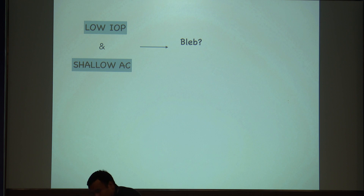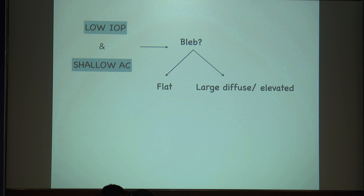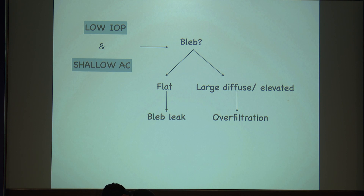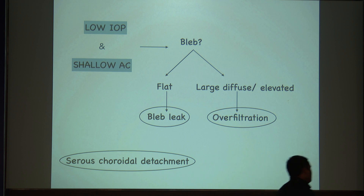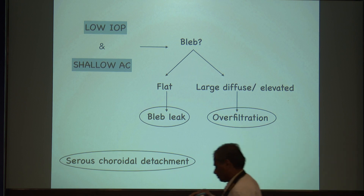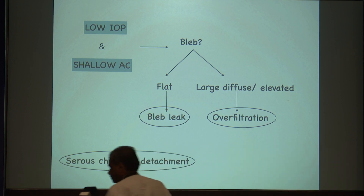When you have a low IOP with a shallow AC, you have to look at the bleb — how the bleb characteristic is, whether it is flat, diffuse, or elevated. If the bleb is flat, look for a bleb leak; if it is large diffuse or elevated, look for over-filtration. A serous choroidal detachment is actually a complication of hypotony rather than directly a trabeculectomy.